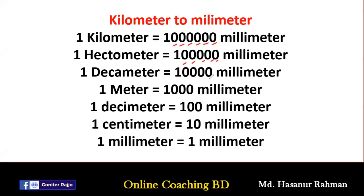Dekameter: one dekameter equals ten thousand millimeters. One meter equals one thousand millimeters. One decimeter equals one hundred millimeters. One centimeter equals ten millimeters. To memorize these, we use the mnemonic KHDM DCM — Kilometer, Hectometer, Dekameter, Meter, Decimeter, Centimeter, Millimeter. If we know this formula properly, we can easily solve the problems.